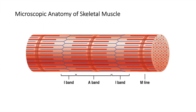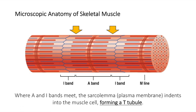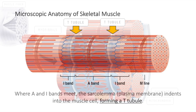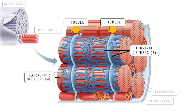At each junction of the A and I-bands, the sarcolemma indents into the muscle cell, forming a transverse tubule or T-tubule. These tubules run deep into the muscle fiber between cross channels, or terminal cisterns, of the elaborate smooth endoplasmic reticulum called the sarcoplasmic reticulum, or SR. Regions where the terminal cisterns border a T-tubule on either side are called triads.